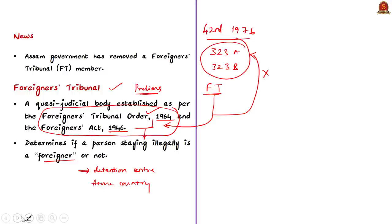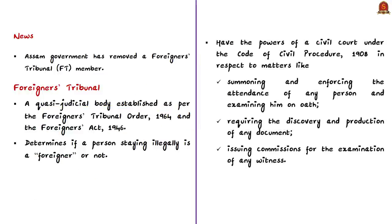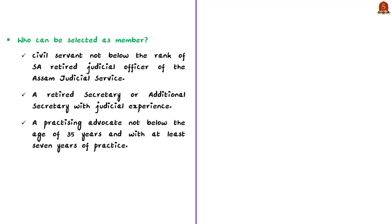Important aspects of the Foreigners Tribunal: they have the powers of a civil court under the Code of Civil Procedure 1908, in respect to matters like summoning and enforcing attendance of any person, requiring the discovery and production of any document, or issuing commissions for the examination of any witness. These tribunals also have the power to regulate their own process, making them quasi-judicial in nature. In the state of Assam, a member can be a retired judicial officer of the Assam judicial service.